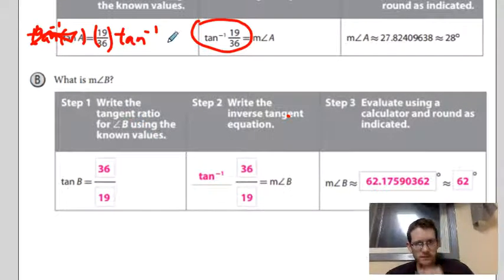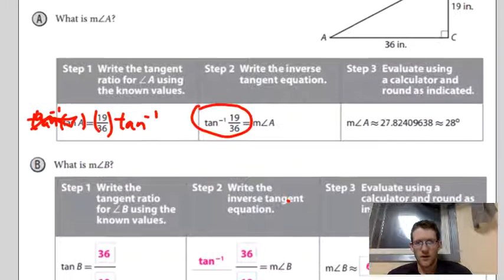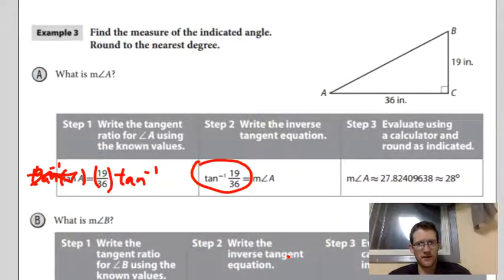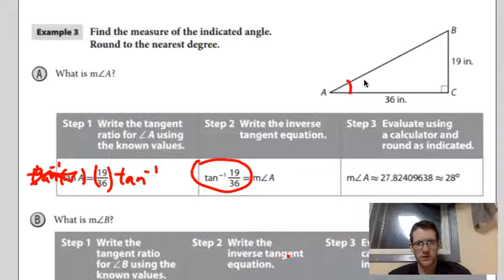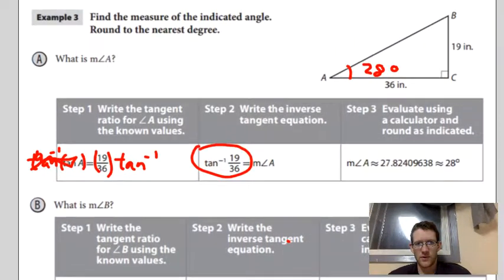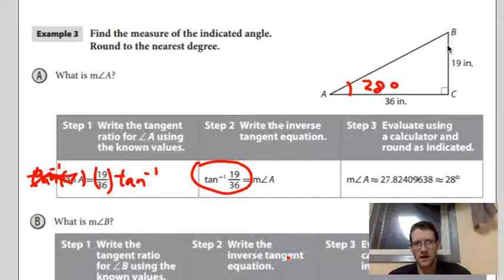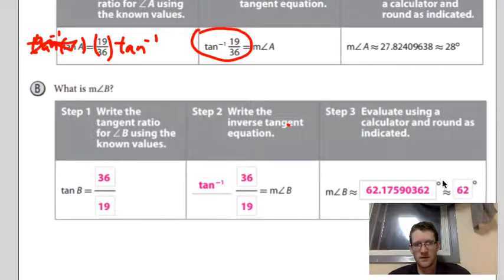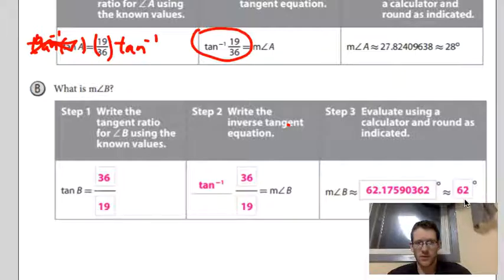What is the measure of angle B? Angle B, we can do the shortcut way. If angle A here is 28 degrees, what's an easy way to calculate what angle B is? Well, we just subtract it from 90. So that just gives us 62. But we can double check their way. We would do the inverse tangent of the opposite over adjacent here. So the inverse tangent of 36 divided by 19, equals 62.1, blah, blah, blah.